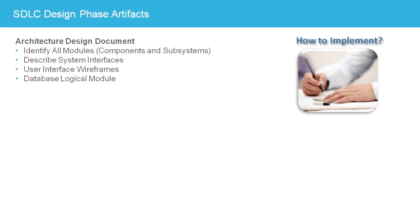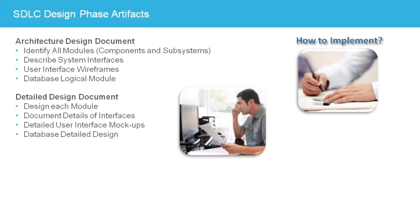However, the architecture document will still primarily specify what must be implemented, without details of how to implement it. The details of how to implement each module are specified in the detailed design document. For each module, the detailed design document describes the algorithms and data structures used, detailed design diagrams, and detailed interfaces. The interfaces will include the exact data items transferred between modules, along with their data type and other attributes, like permanence and scope.